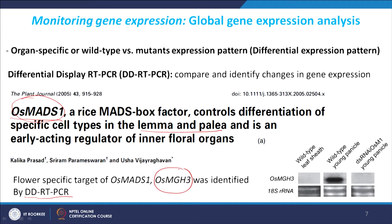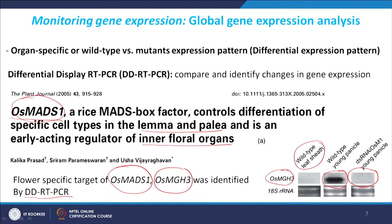It was shown that OSMGS3 was expressed in the inner floral organs. If you look at the northern blot and the expression pattern of OSMGS3, you can see that in wild type leaf sheath it is not expressed, whereas in the young panicle — panicle is inflorescence in the case of rice — it has a very high level of expression. But in a panicle that is mutant where MADS1 is down-regulated, the expression of OSMGS3 also disappears. This means there is organ-specific or tissue-specific regulation of this gene, and its activation is dependent on MADS1. This is one example of differential display RT-PCR.